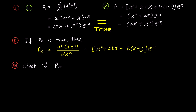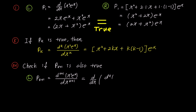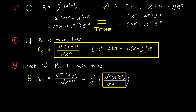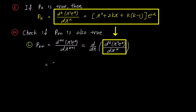Now let's verify if P sub k plus 1 is also true. The left side P sub k plus 1 can be obtained by substituting k plus 1 for k in the left side of P sub k written above. This expression represents the k plus 1th derivative of x squared times e to the power of x, which, as explained earlier, can be expressed as differentiating the result of the kth derivative of x squared times e to the power of x with respect to x once more. Since we assume that P sub k is true, the kth derivative expression can be replaced with the formula in the yellow box above. Therefore, we have the derivative of bracket x squared plus 2kx plus k times (k minus 1) bracket times e to the power of x.